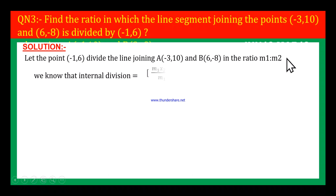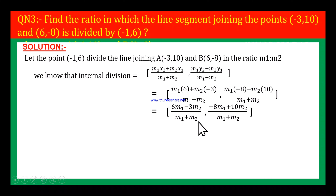In this internal division formula, let us substitute X1, Y1 and X2, Y2 values. X1, Y1 is (-3, 10) and X2, Y2 is (6, -8), and let us leave M1, M2 as it is. Now, M1 into X2 is 6M1, plus M2 into X1 which is -3, divided by M1 plus M2.